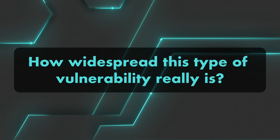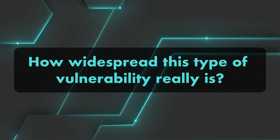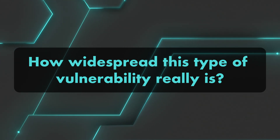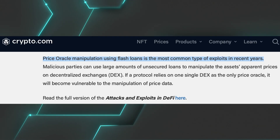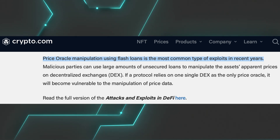Hackers took out over a million dollars in loans with only a thousand dollars in collateral and drained Mirror of two million dollars. That raises the question of how widespread this type of vulnerability really is. Oracle manipulation is not uncommon — as a matter of fact, it is quite a classic attack vector.